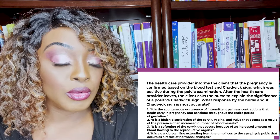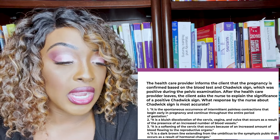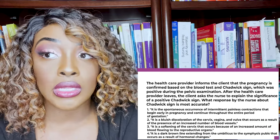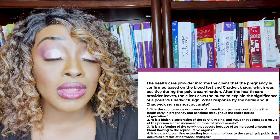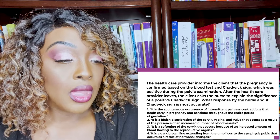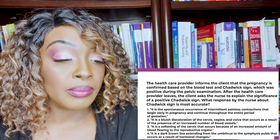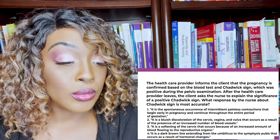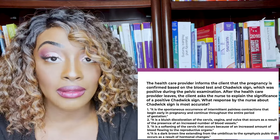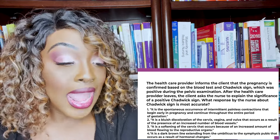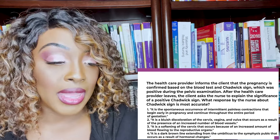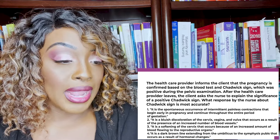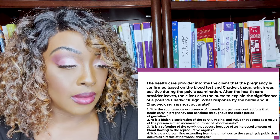The correct answer is two — the bluish discoloration of the cervix, vagina, and vulva, caused by an increased number of blood vessels. Now let's look at the wrong answer choices. One — the spontaneous occurrence of intermittent painless contractions — that's Braxton Hicks contractions. Choice three — softening of the cervix — that's Goodell's sign. And choice four — that dark brown line — that's linea negra. So the correct answer to this question is answer number two.